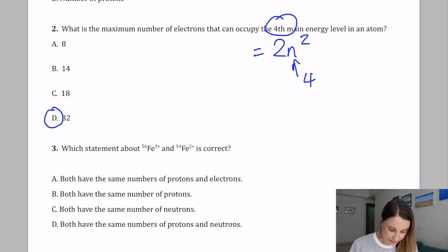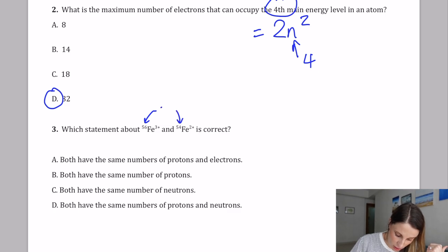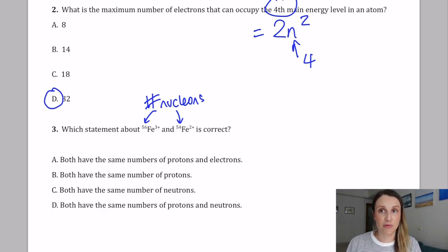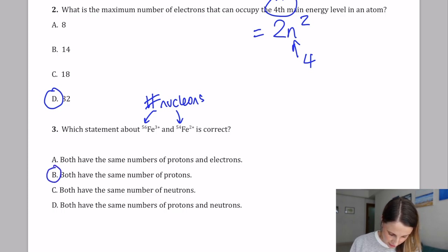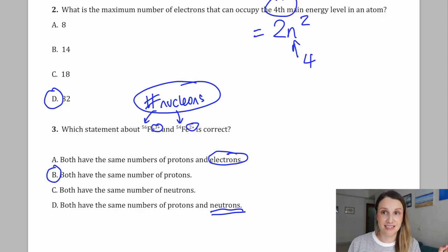Question three asks which statement about two isotopes of iron is correct. The top number is the number of nucleons — protons plus neutrons — but they're both iron. What's the same about them is that they both have the same number of protons, because what identifies an element as iron is that same proton count. They have different numbers of electrons because of different charges, and different numbers of neutrons because the mass number differs in each case.